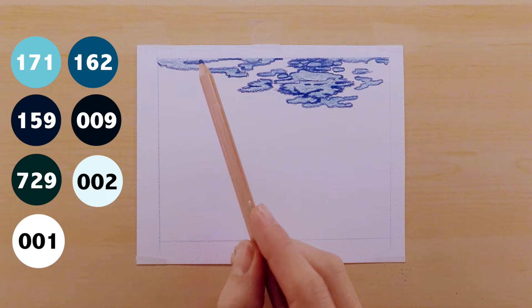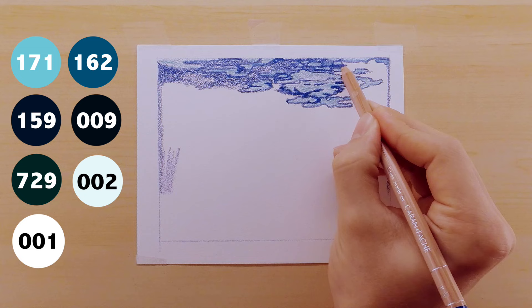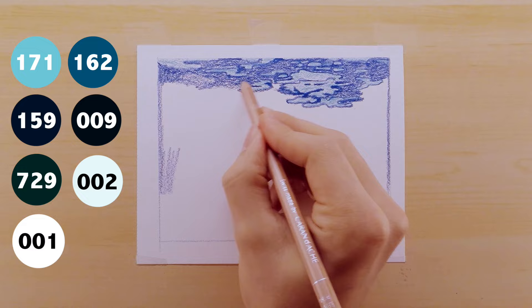After I outline this piece, I just go ahead and lay down a nice layer of the 162 pretty much three quarters of the way down the page. There's really no need to go all the way down the page because as you go down it's going to get darker and darker and this color is just going to fade away into black.